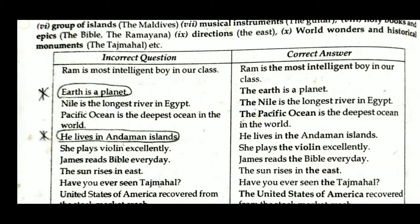'Earth is a planet' is incorrect. For unique objects like the Sun, Moon, and Earth, you must use 'The' — correct is 'The earth is a planet.' 'Nile is the longest river in Egypt' is incorrect; before rivers we must use 'The' — correct is 'The Nile is the longest river in Egypt.'